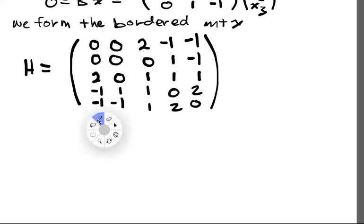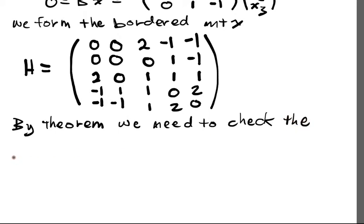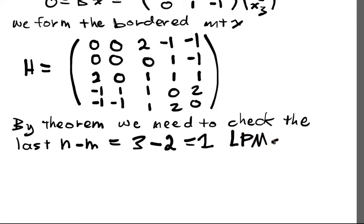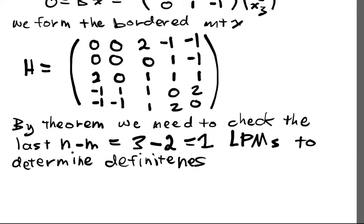And we're going to want to know principal minors of it. But how many principal minors do we have to actually calculate? So by the theorem that we saw in the last video, we need to check the last n minus m equals... Well, n was 3. So we have a 3 by 3 A. And we have two constraints. So m is 2, equals 1, leading principal minors.